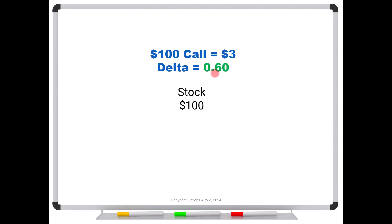Now notice it's a positive number, and that will always be true for a call option. And what that means is that it's positively correlated. So stock price up, call option up, stock price down, call option down. It moves in the direction of the stock.